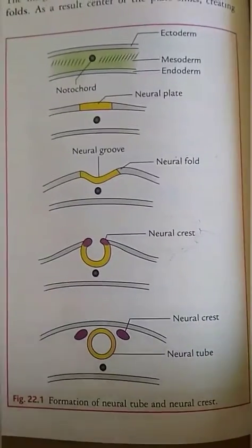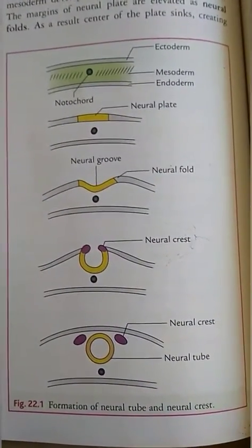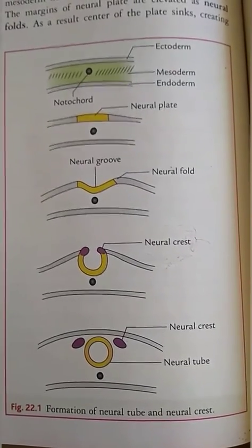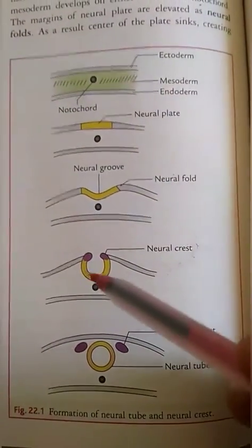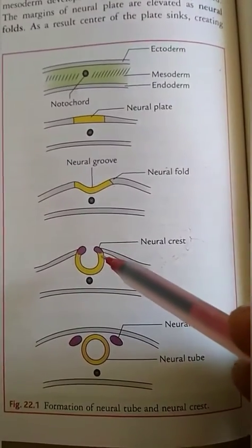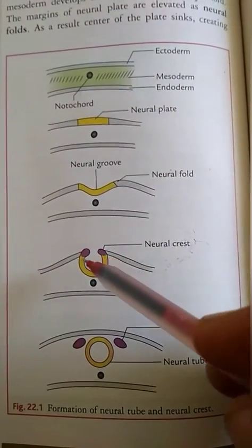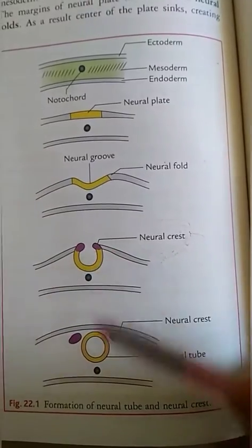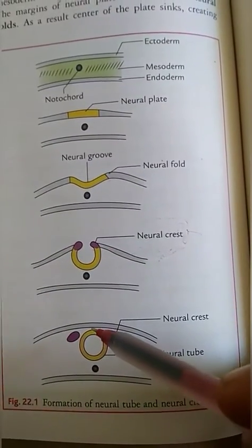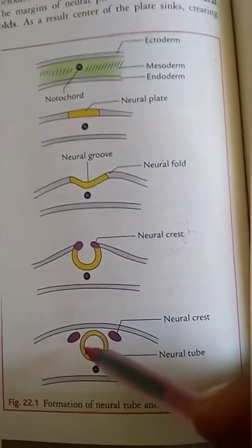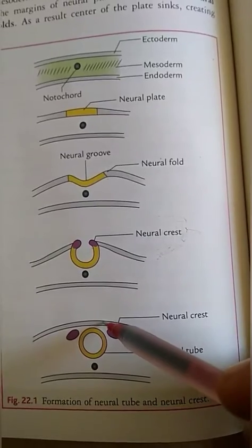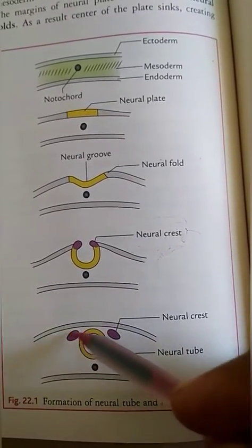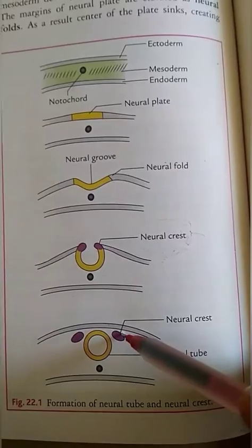The position of the anterior neuropore in adults is represented by the lamina terminalis of the third ventricle. The fusion of neural folds takes place in such a manner that like cells fuse with like ones, so that the dorsal surface of the neural tube gets detached from the surface ectoderm and the space between them is occupied by neural crest cells.